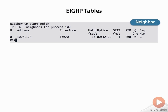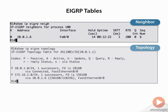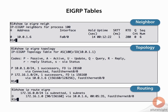EIGRP maintains three different tables. The first is the neighbor table. If we don't have a neighbor in this neighbor table, then we're done — no neighbor means no routes from the neighbor. We see the neighbor table with the 'show ip eigrp neighbor' command, the topology table with 'show ip eigrp topology', and the routing table with 'show ip route eigrp'.